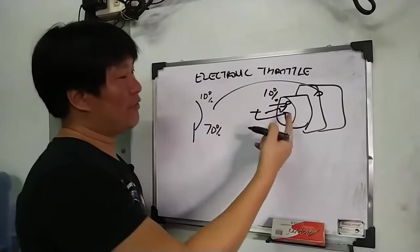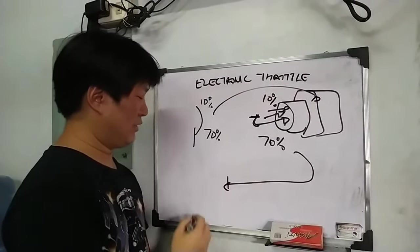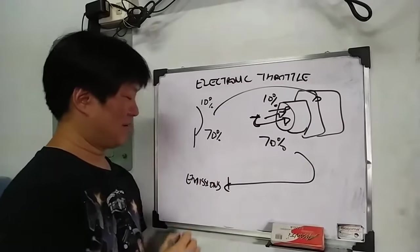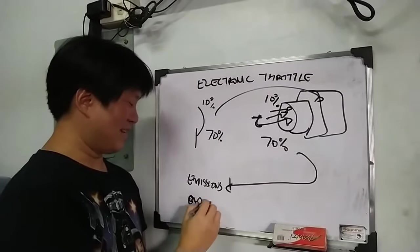A lot of that fuel in that particular short amount of time, lumalabas ng tambucho as emissions. Hindi nasusunog. And America says that is bad. Because it's pollution.